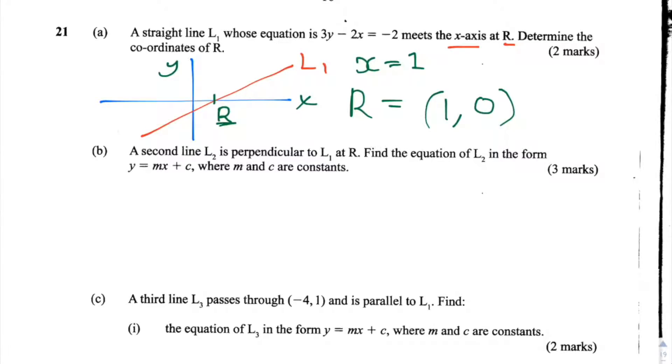So now moving on to 21b. 21b says a second line L2 is perpendicular to L1 at R. Find the equation of L2 in the form y equals mx plus c where m and c are constants.